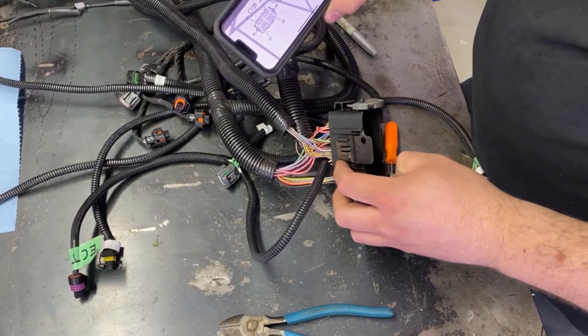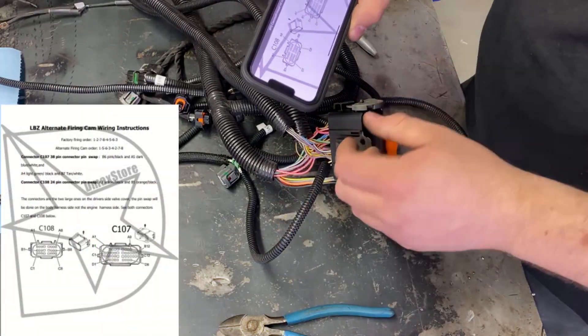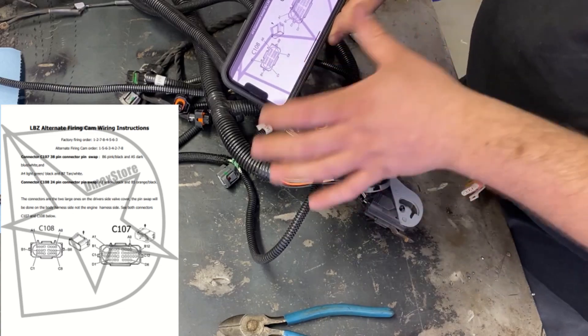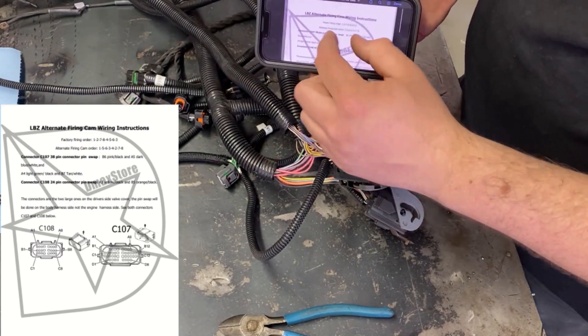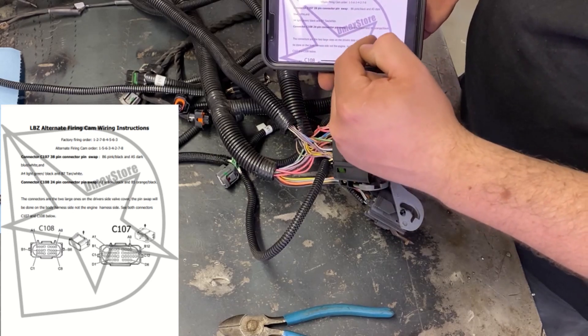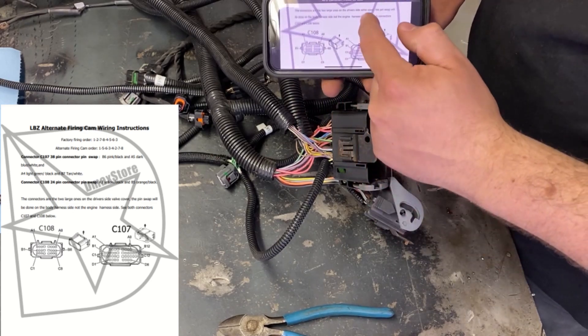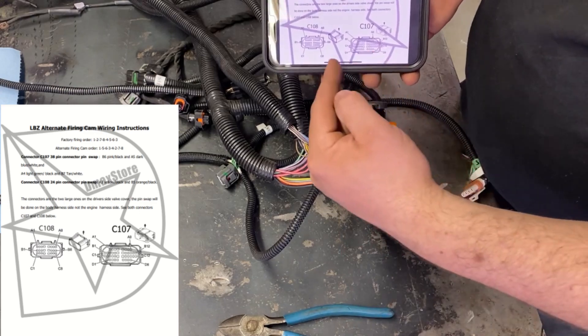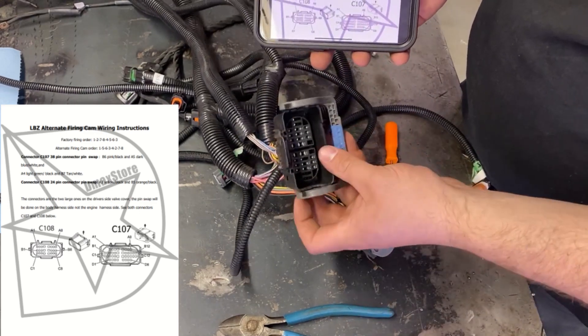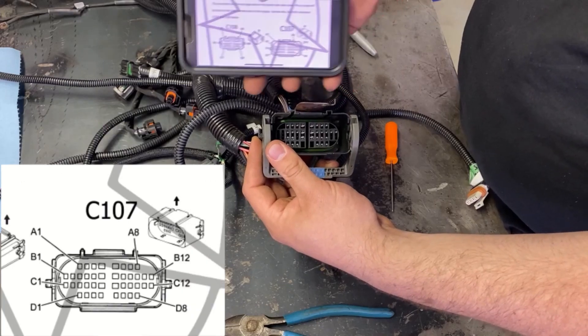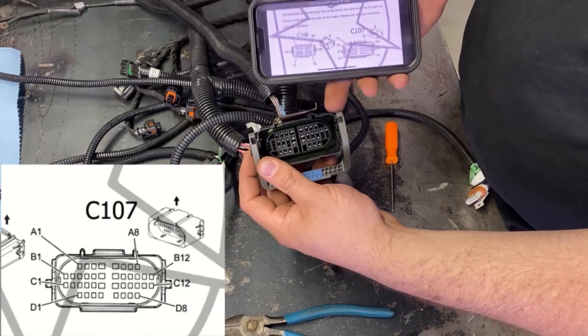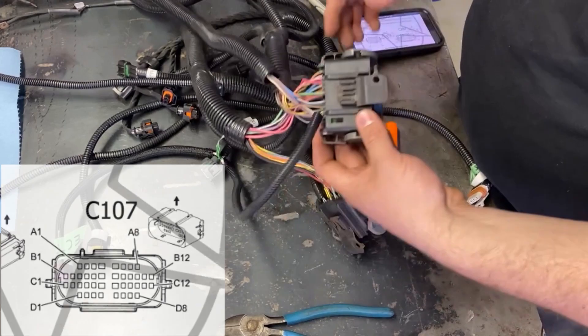The instructions show you the connectors C108 and C107. It gives you the colors and the pin locations of which ones you're swapping. The only difference doing it on the engine side harness is that this stuff is actually swapped. When you're looking at the connector here, A1 shows being on the left. A1 on this is actually going to be on the right as you're looking at it.